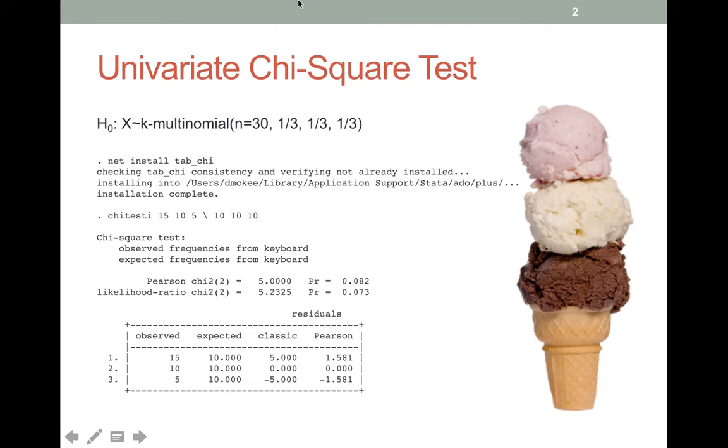In this case we're going to get three numbers back. We'll get the counts of people that liked strawberry, vanilla, and chocolate. Our data comes from 30 people, but we're going to get three numbers back which are the counts of people that gave each as an answer.